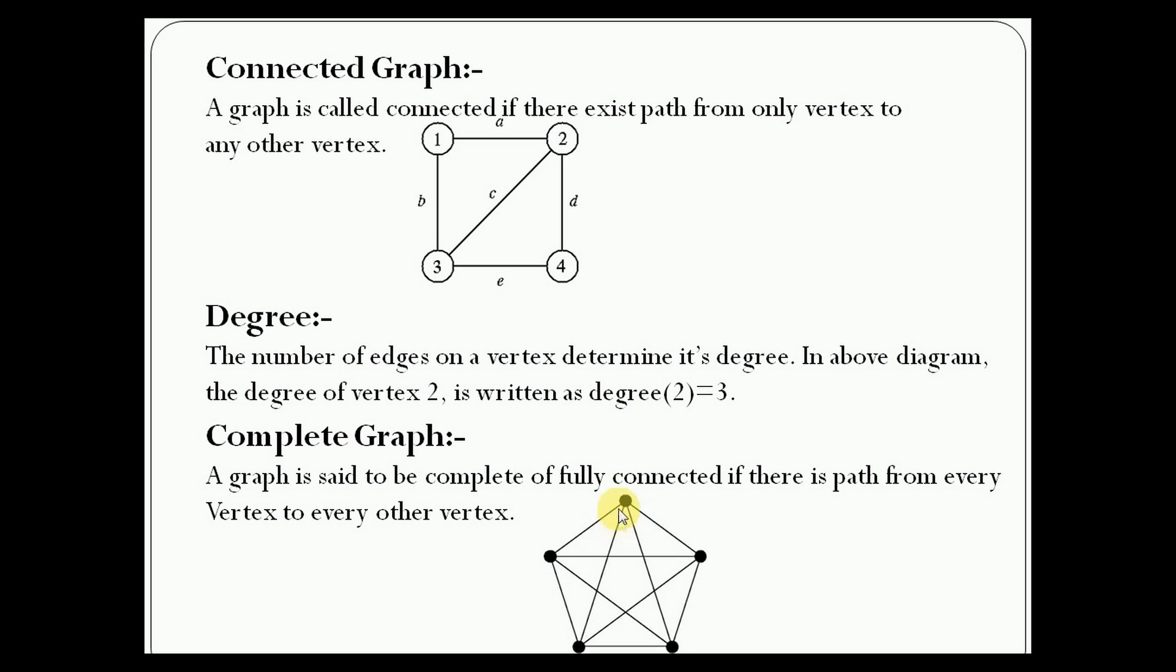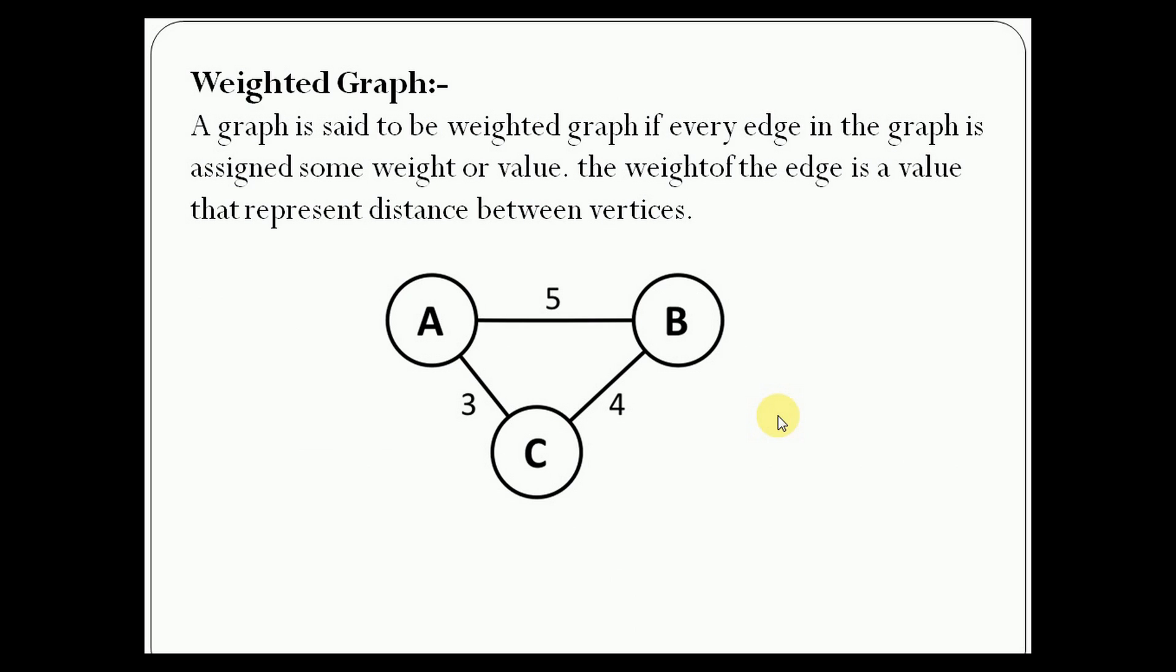A graph is said to be a weighted graph if every edge in the graph is assigned some weight or value. The weight of the edge is a value that represents the distance between two vertices.